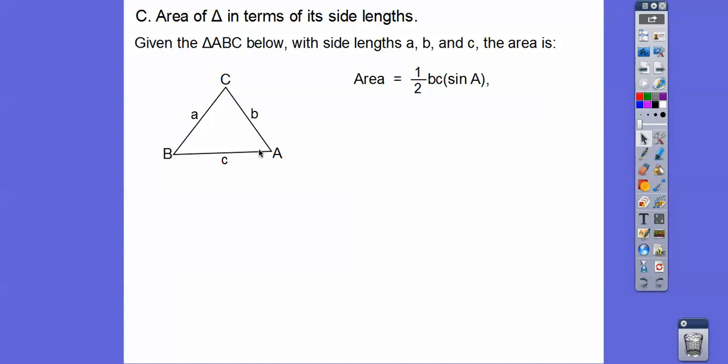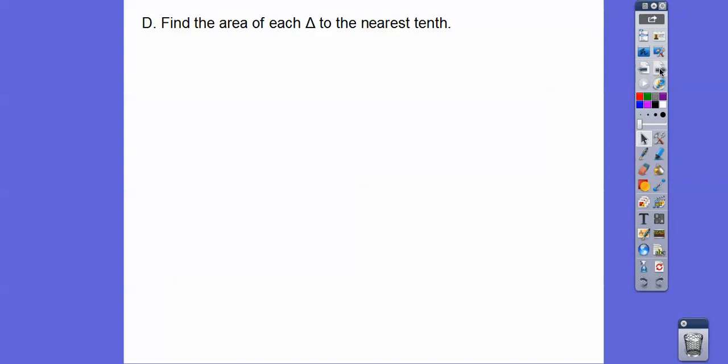So it's one half this angle times the sides that are including that BC. Or we can do one half this angle right here times the sides that are including that AC. Okay. Or we can do one half this angle times these two sides right there. Okay. So those three fractions equal each other. And we're going to use that in the next lesson.